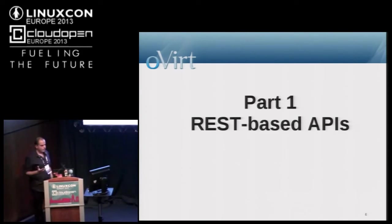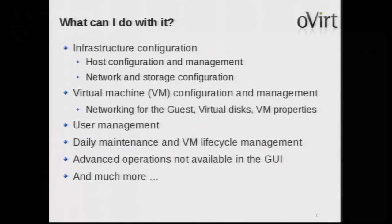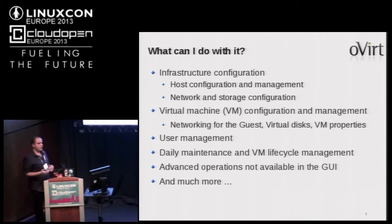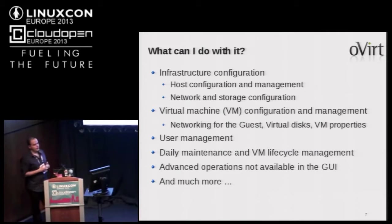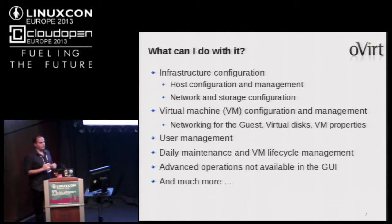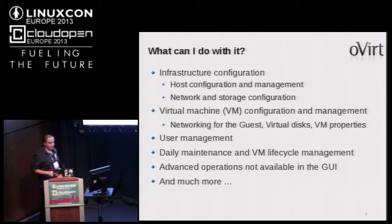Starting with the REST-based API — what can we do with it? We can do infrastructure configuration to configure hosts, networks, and storage; create and provision new virtual machines; manage users; and do different daily maintenance. We can do basically anything through the API that can be done with the oVirt engine — and some operations exposed via the API aren't even exposed through the UI. If you work with the API, you can do everything and beyond what can be done in the UI.